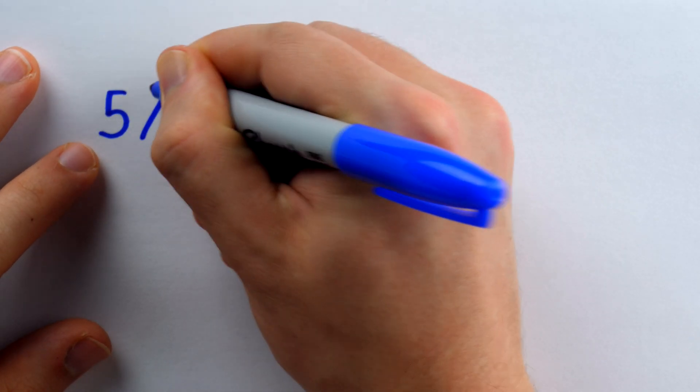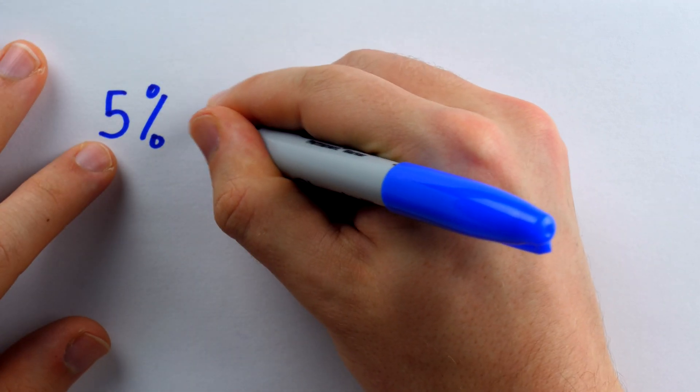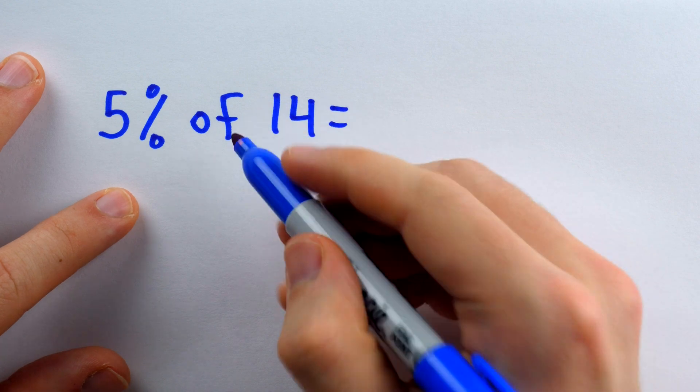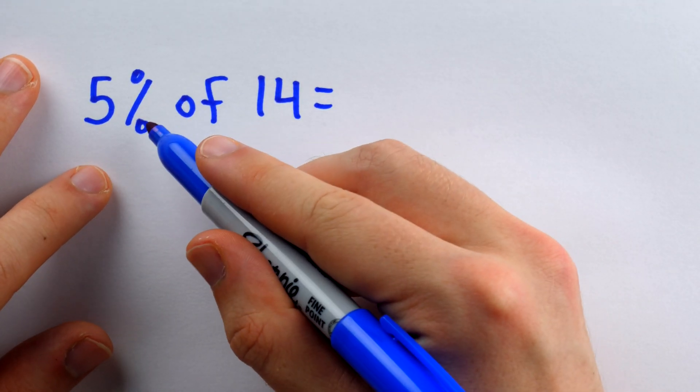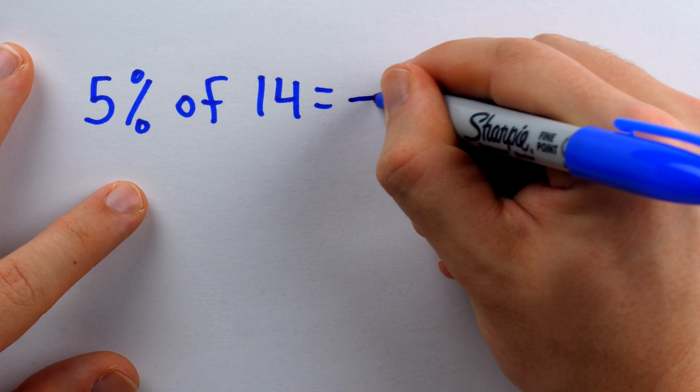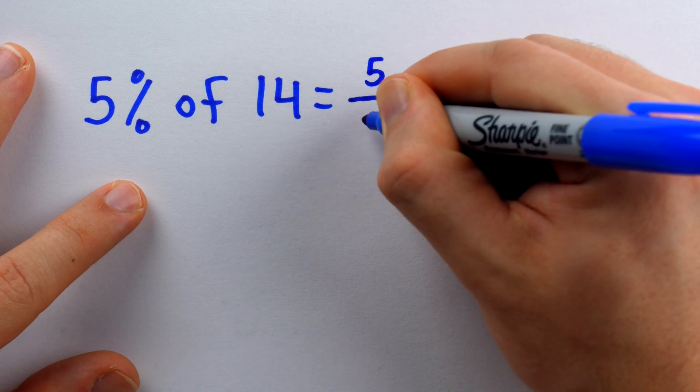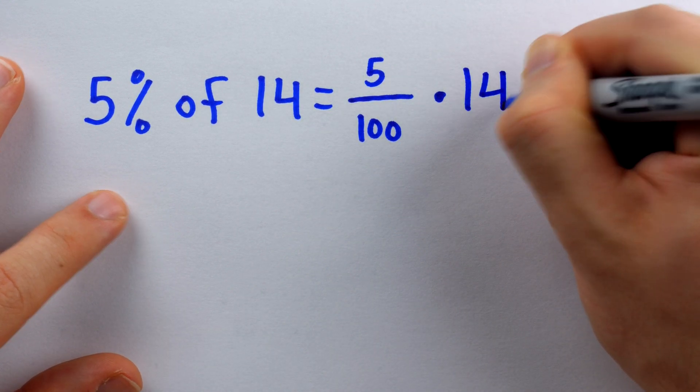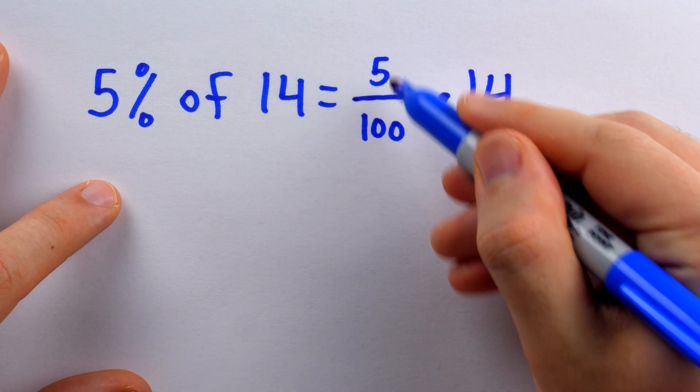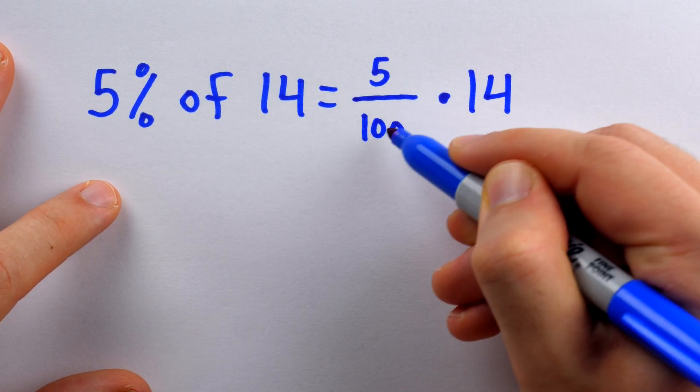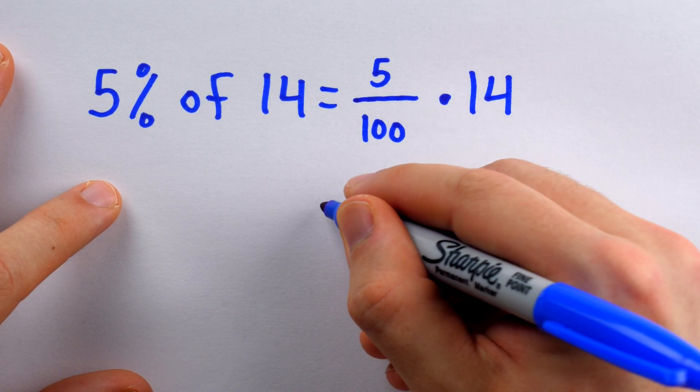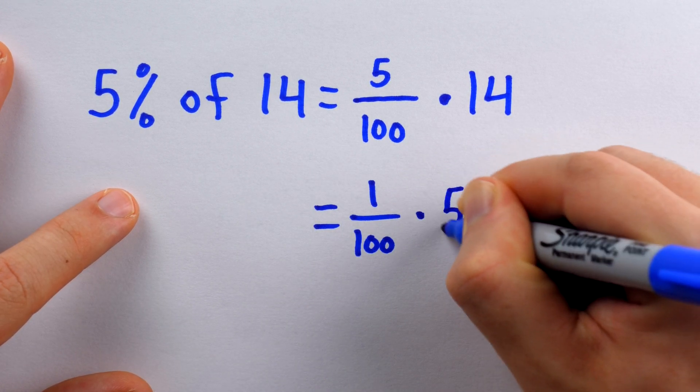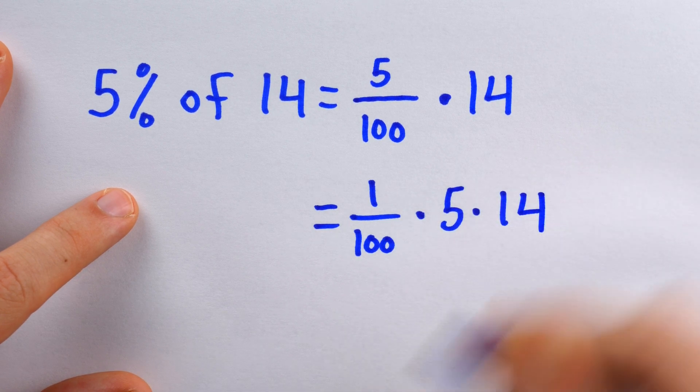So why does the percent switching trick work? Well, let's break this down: 5% of 14. Of means multiplication, and percent means out of 100, so we could rewrite this as 5 out of 100 multiplied by 14. Then, this 5 over 100, we could take that denominator of 100 out as its own fraction, and thus write this as 1 over 100 times 5 times 14.